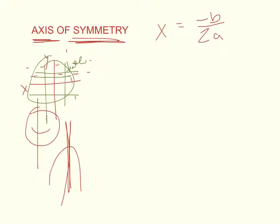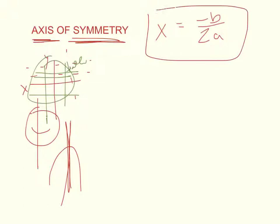Sometimes you'll see people attach that negative in the front differently. I don't like that because it confuses students. Just put the negative up there on top and let's be done with it. That's your equation — x equals negative b over 2a.